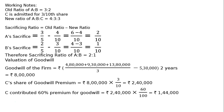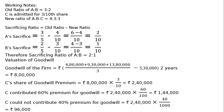C contributed 60% premium for goodwill: Rs. 2,40,000 multiplied by 60% equals Rs. 1,44,000. C could not contribute 40% of her share of goodwill premium, that is Rs. 2,40,000 multiplied by 40% equals Rs. 96,000.